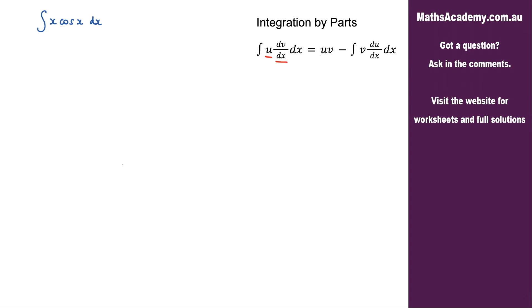Okay let's go ahead and tackle this question. The first thing we need to do is to assign the u and the dv by dx. So we have let u equal and dv by dx equals.